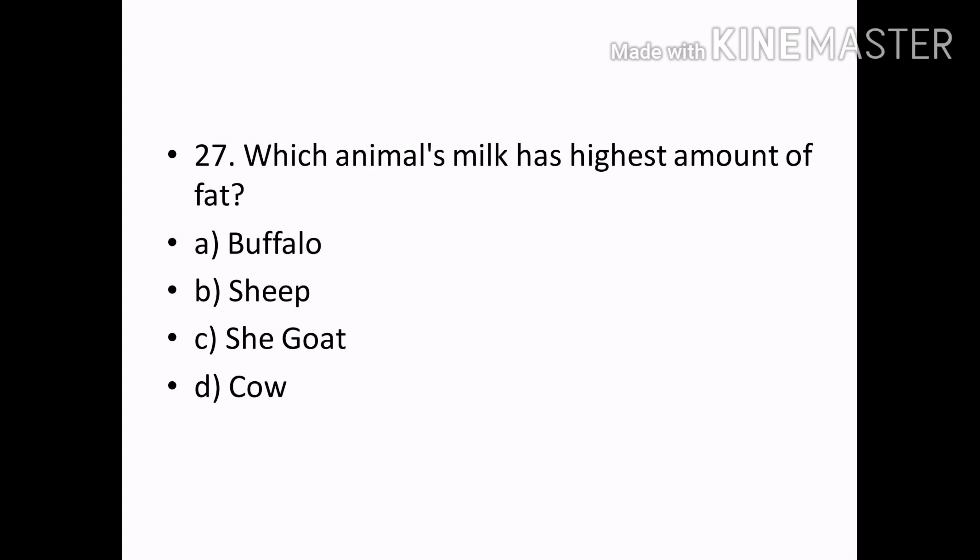Which animal's milk has the highest amount of fat? Options — Buffalo, Sheep, Goat, Cow. Correct answer: Option A — Buffalo.